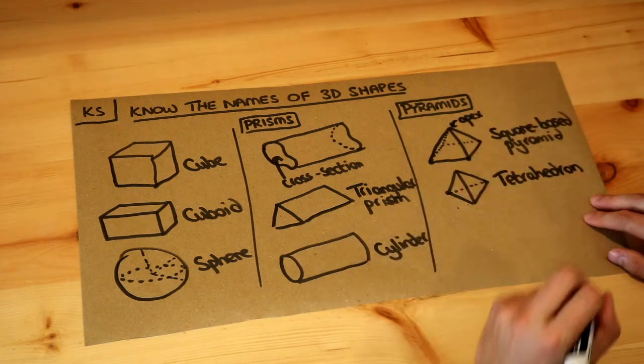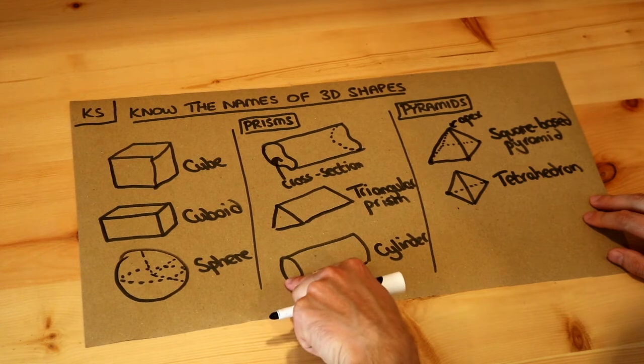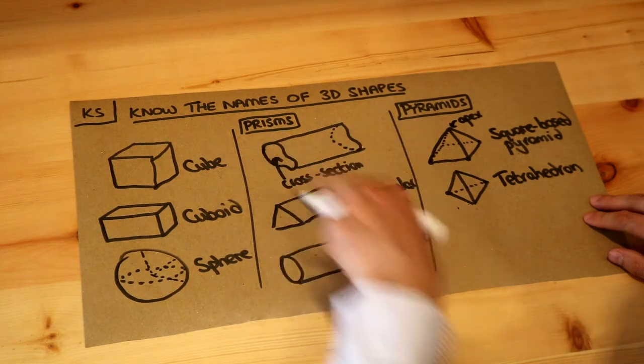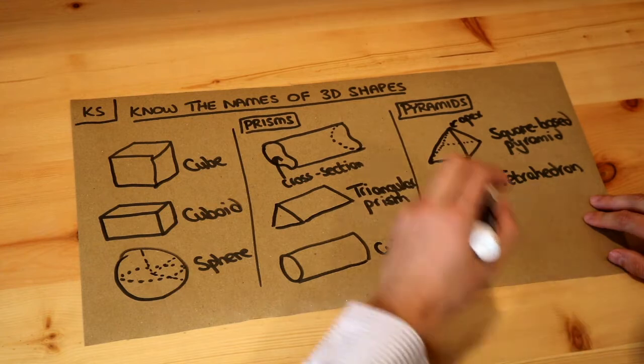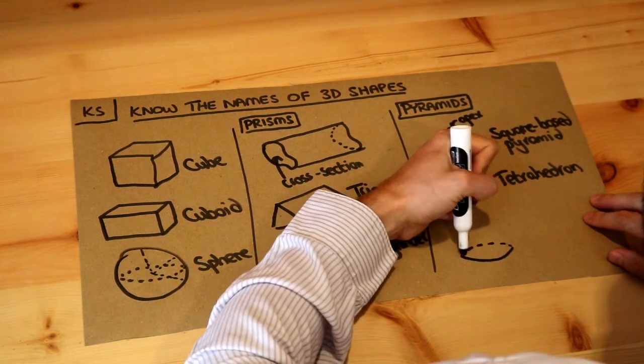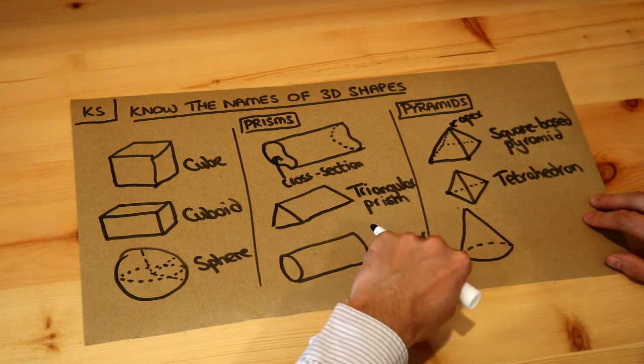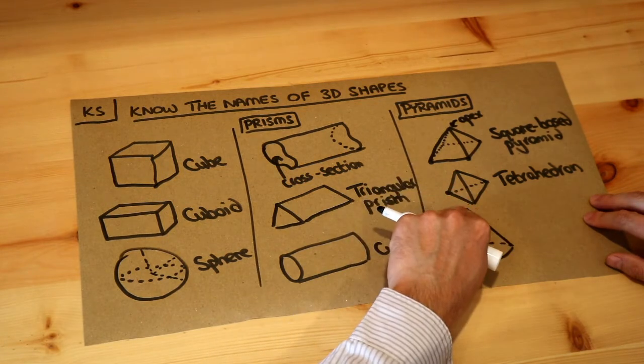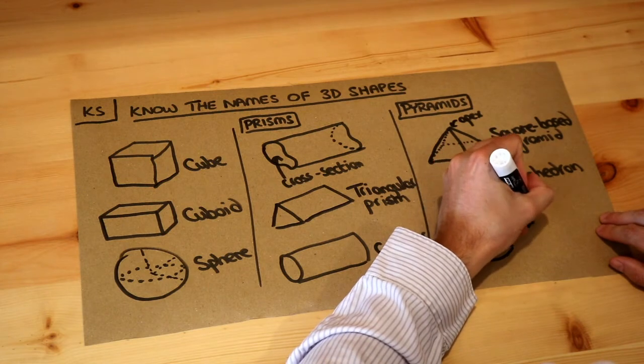And then just like with a cylinder was a kind of circular base prism, but we don't call it that, we call it a cylinder, there's also a similar pyramid version of that. If you have a circular base, and every point on that circle joins up to some apex at the top, that is known as a cone.